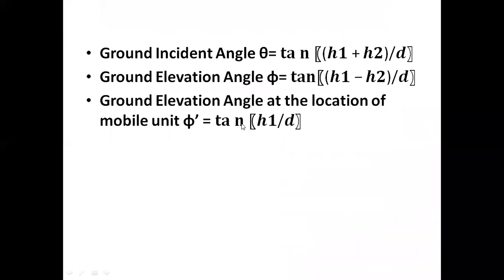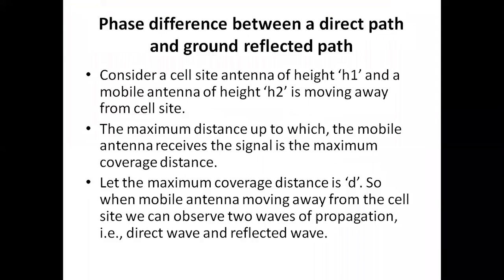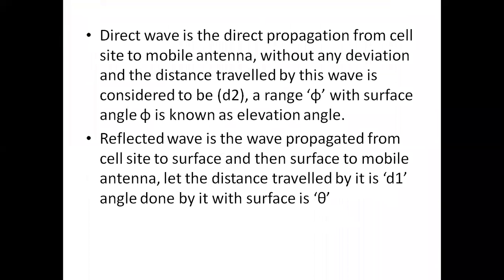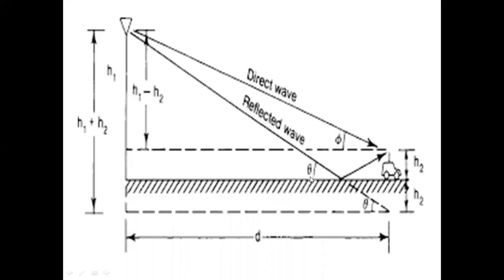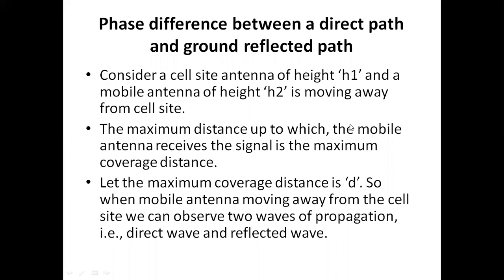Now we will look at the phase difference between the direct path and the ground. We consider a cell site antenna of height h1 and a mobile antenna of height h2, and the mobile unit moves away from the cell site. From the figure, the cell site antenna height is h1 and the mobile unit antenna height is h2.